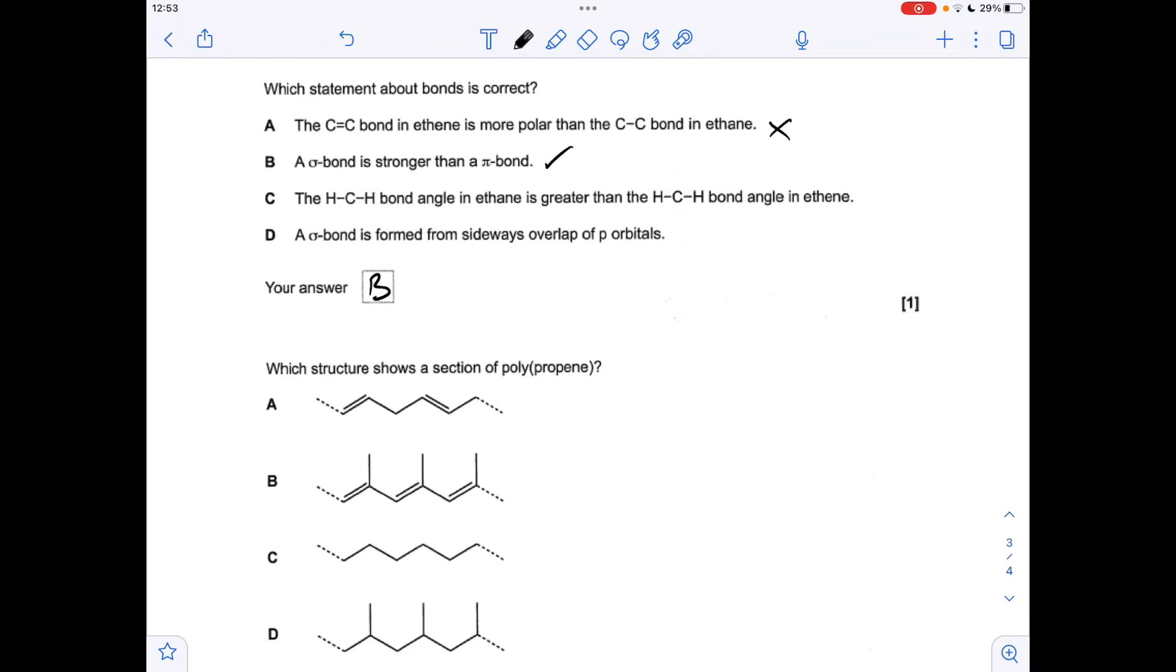We'll just rule the other two out. Just for revision purposes. So the H-C-H bond angle in ethane is 109.5. Which is actually lower than the 120 in ethene. So that's why that's not right. And D is not right. Because a sigma bond is formed by the direct overlap of orbitals. What they've described there is the formation of a pi bond.